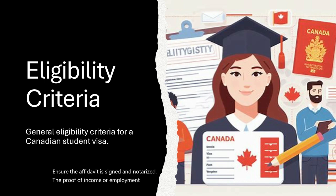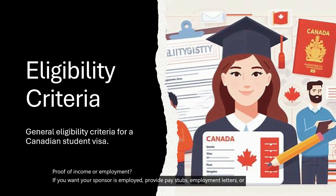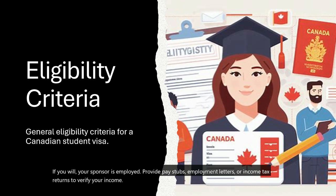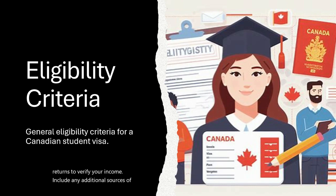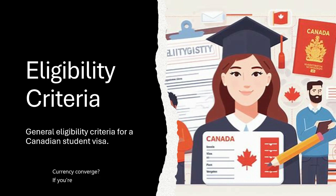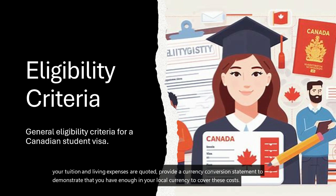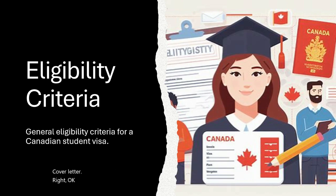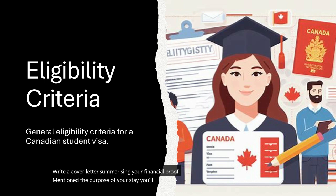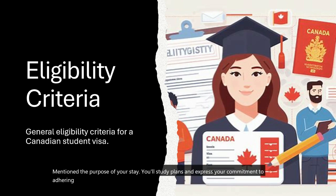Seventh, Proof of Income or Employment: if you or your sponsor is employed, provide pay stubs, employment letters, or income tax returns to verify your income, including any additional sources of income. Eighth, Currency Conversion: if your bank statements or financial documents are in a currency different from the one in which your tuition and living expenses are quoted, provide a currency conversion statement to demonstrate that you have enough in your local currency to cover these costs. Ninth, Cover Letter: write a cover letter summarizing your financial proof, mentioning the purpose of your stay, your study plans, and expressing your commitment to adhering to the financial responsibilities.